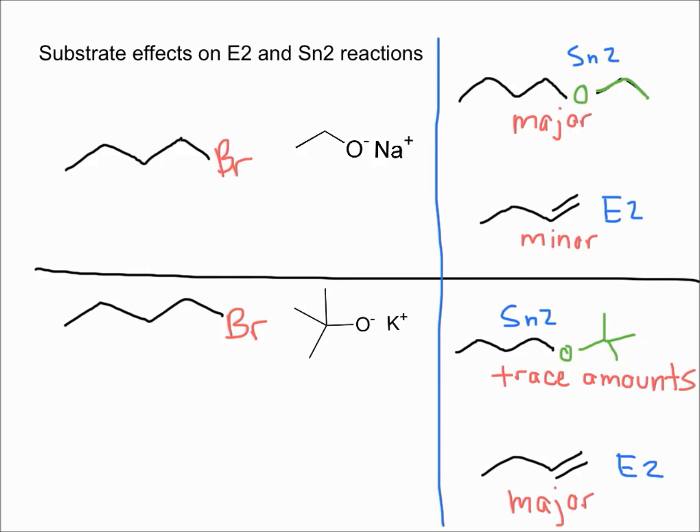On the other hand, your sodium ethoxide molecule is pretty small, so it's going to be able to reach this carbon and kick out the bromine to do a substitution reaction.